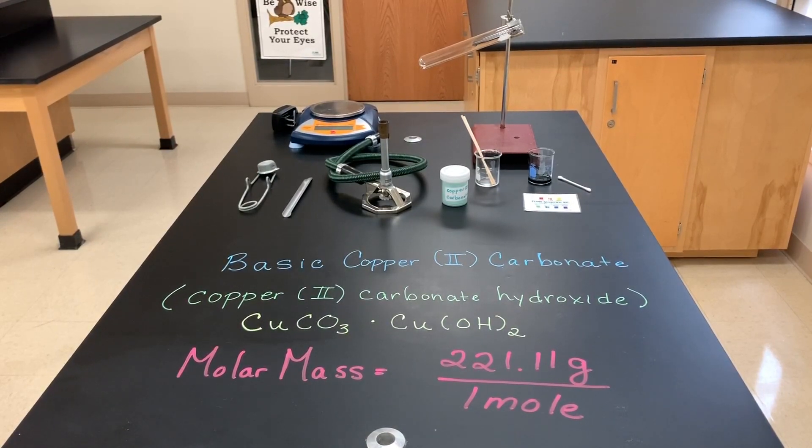When we mass out our copper two carbonate, it includes copper two carbonate and copper two hydroxide. The molar mass is 221.11 grams per mole.